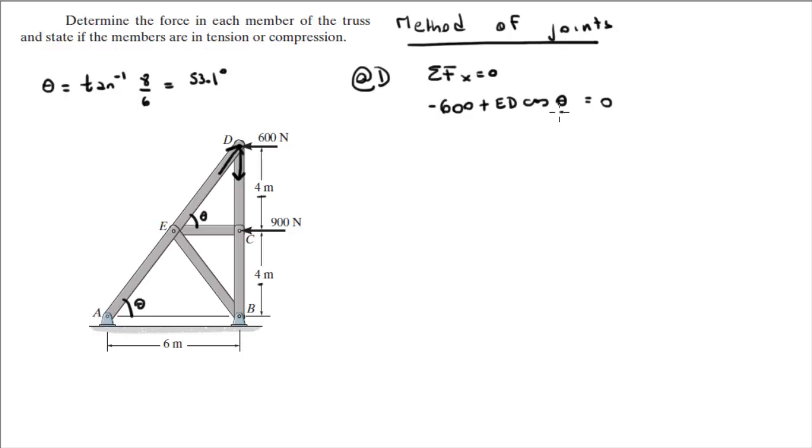So you plug in theta over here and you solve for ED, and you get that ED is equal to 1000 newtons. And as you can see, if it's going up here, it's going down here, and that means that ED is in compression.